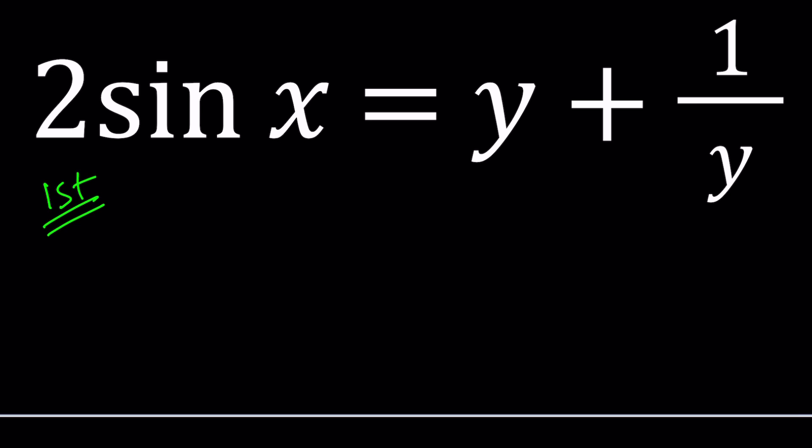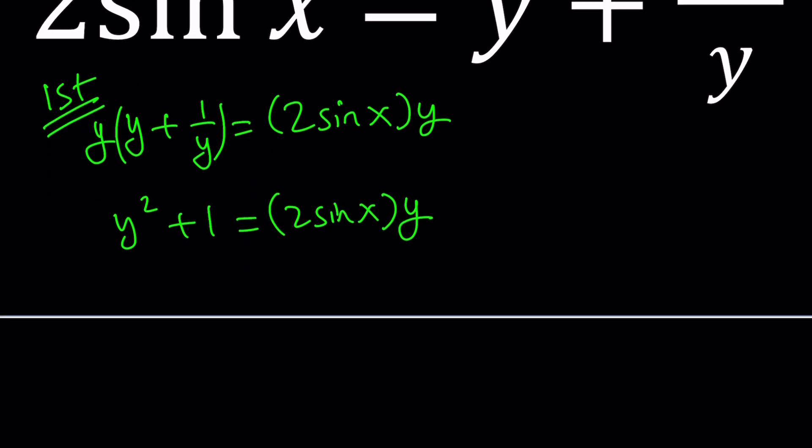So for my first method, I'm going to go ahead and put the Y plus 1 over Y on the left-hand side. Because I'm about to turn this into a quadratic equation. Multiply both sides by Y.